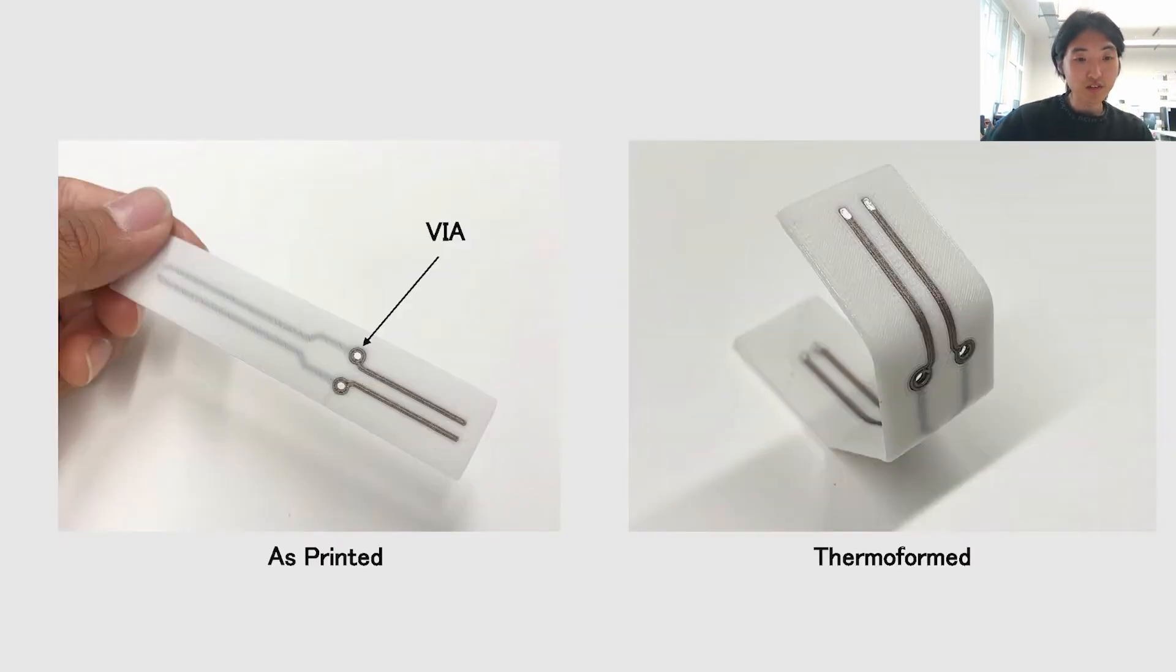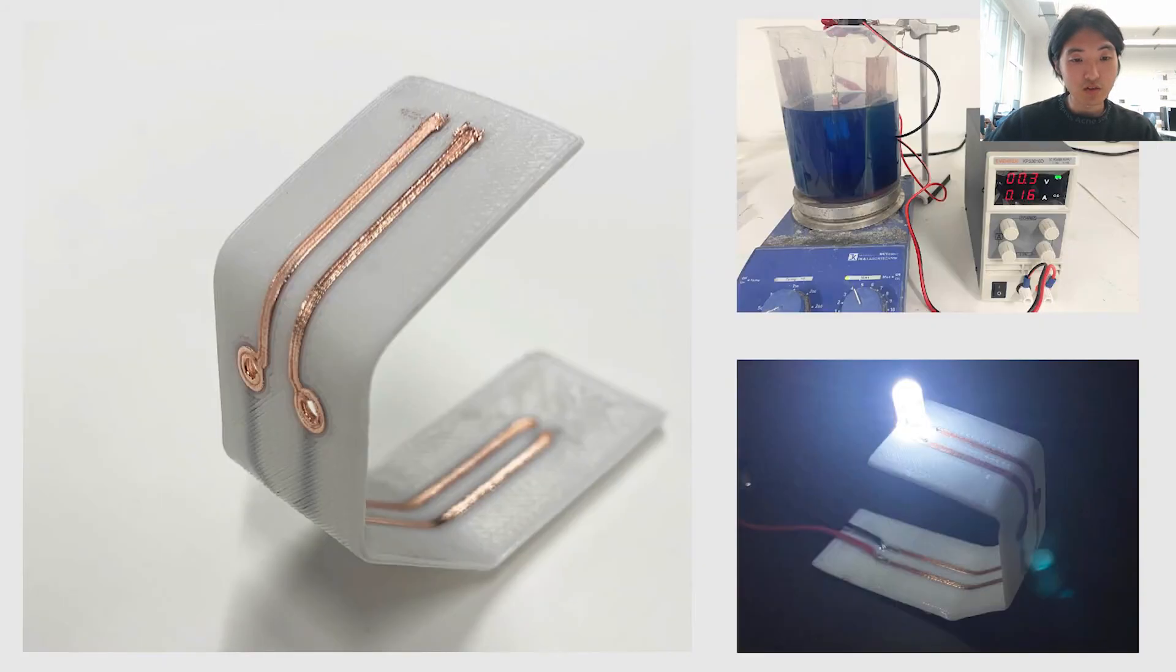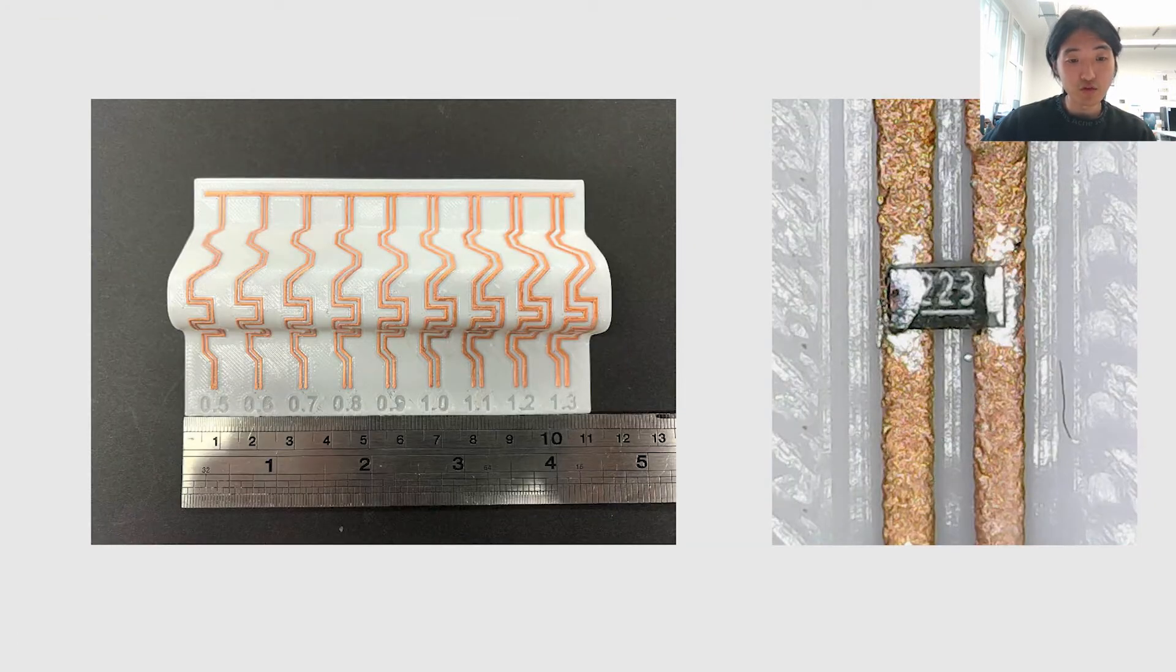We first tested the feasibility of thermoforming conductive trace on an LED circuit. We first printed the flat double-sided circuit board on our open source 3D printer, then heat bent it to the shape as shown on the right image. After shaping it to the desired form, we then copper electroplated the board using a commercially available copper electroplating kit. Then we adhered the electrical components using conductive silver ink and superglue. We were able to 3D print the trace as thin as 0.5mm, thermoform it, and copper electroplate it.